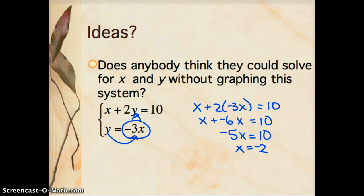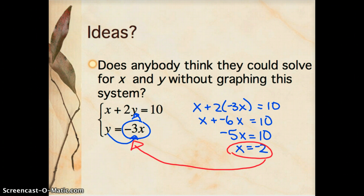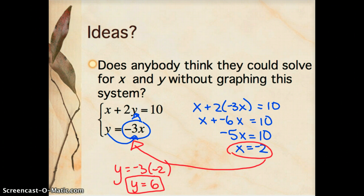That means negative 5x equals 10, and therefore x equals negative 2. But I'm not done yet because I only know what x is, and I need to figure out what y is. So I'm going to use substitution again — this time I know x is negative 2. I'll solve for y by plugging x into the second equation: y equals negative 3 times negative 2, so y equals 6. I believe x equals negative 2 and y equals 6.